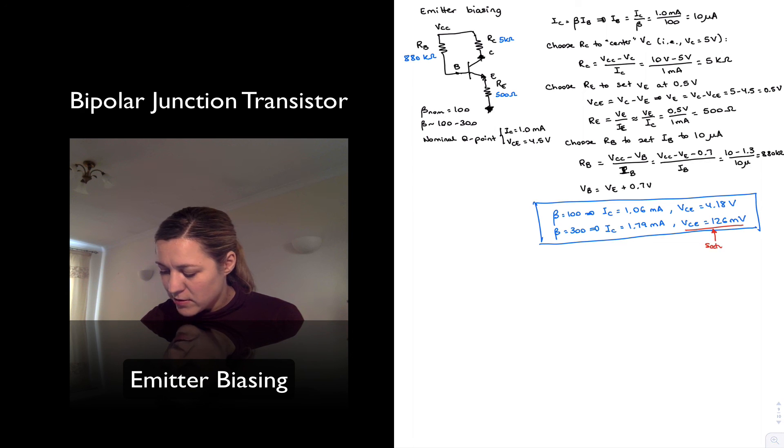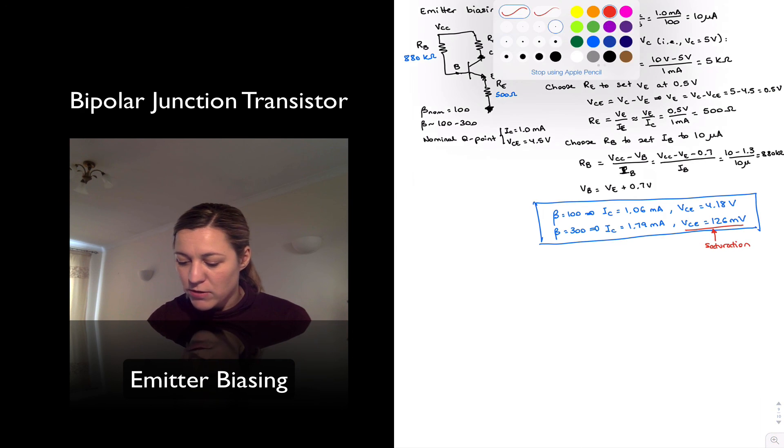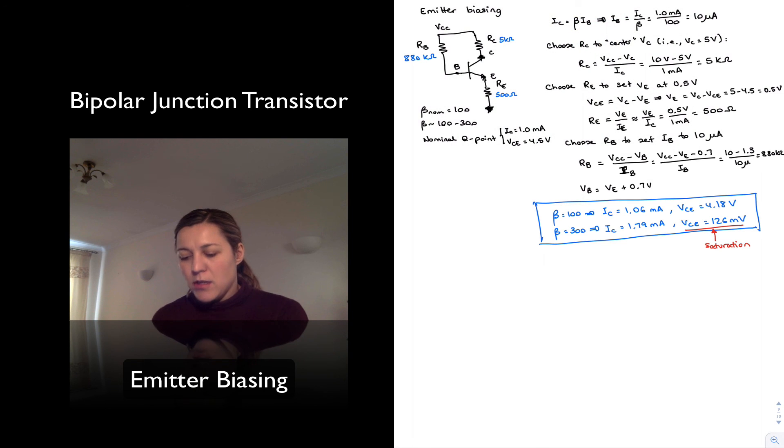Little red light there. We just drove our transistor into saturation just by picking the wrong transistor, right, the one with the wrong beta. So the way we've designed this emitter biasing configuration, it's not very robust to beta variations, it appears.